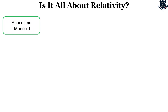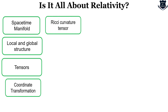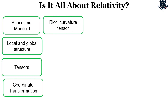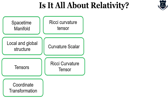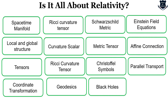When we start with the components of learning General Relativity, the basic components include: spacetime manifold, local and global structures, tensors, Ricci tensor, Riemann curvature tensor, coordinate transformation, Ricci curvature tensor, curvature scalar, geodesics, Schwarzschild metric, metric tensor, Christoffel symbols, black holes, Einstein field equations, affine connection, and parallel transport. These are the basic ideas we cover, from the basics of relativity up to the cosmological scales.